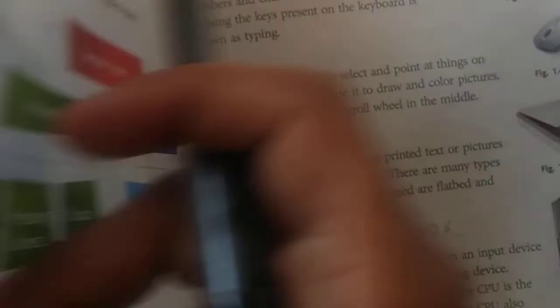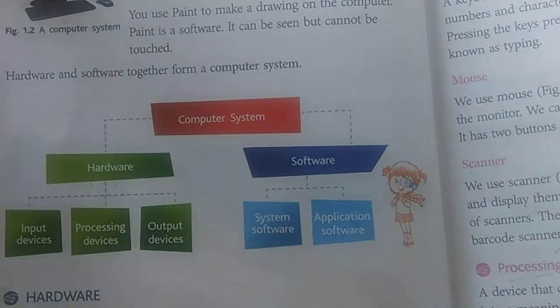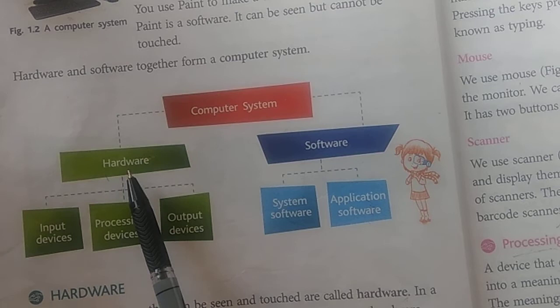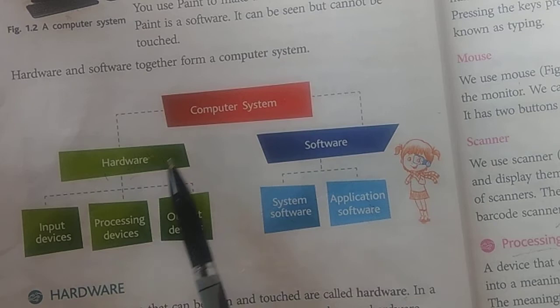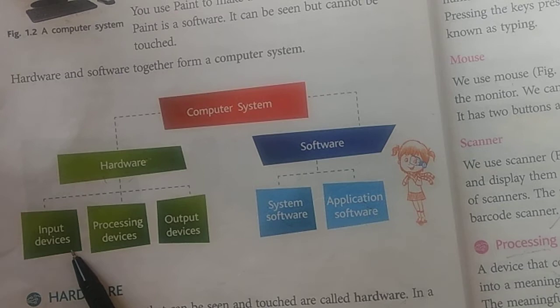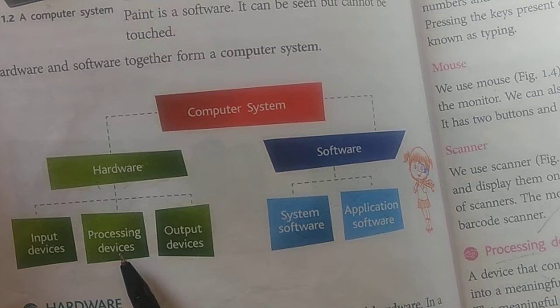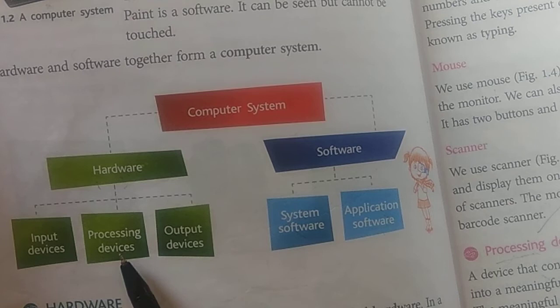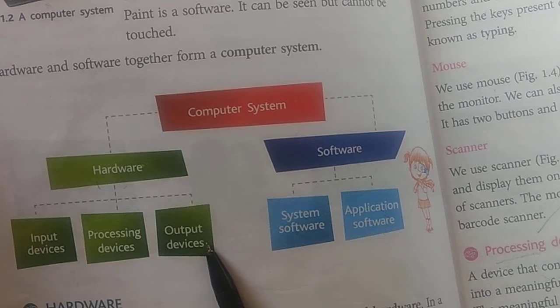Now, come to the next page. Computer System - Hardware and Software together make the Computer System. Hardware is of three types and software is of two types. Hardware includes: input devices - the device used to enter data into the computer; processing devices; and output devices - from which we get the result, like speaker, monitor, printer, etc.